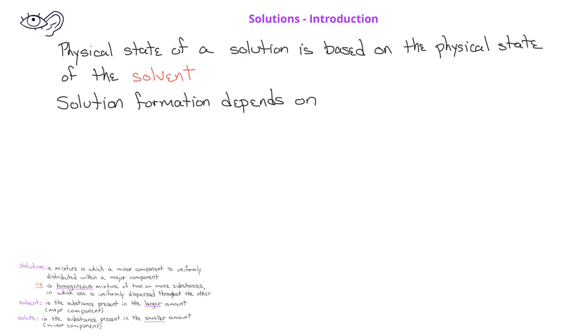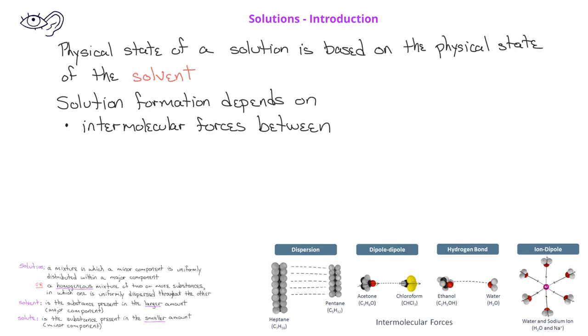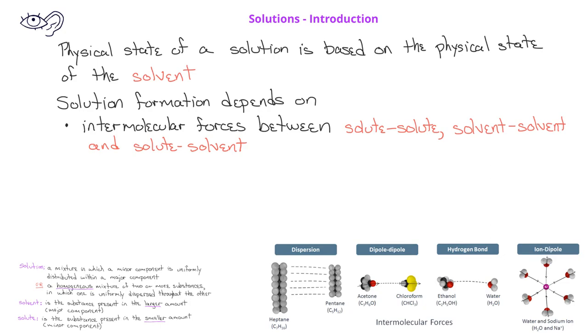First of all, it depends on the intermolecular forces involved in the solution process. And this includes the intermolecular forces between particles of the same substance, for example, between two water molecules or between two hexane molecules, as well as intermolecular forces between the two different components. For example, are there any intermolecular forces between the hexane and the water? In addition to these factors, we also have to consider the natural tendency of substances to spread into larger volumes. This is a concept known as entropy, and although we'll introduce it in the upcoming videos, we'll spend much more time talking about it when we talk about thermodynamics in later chapters.